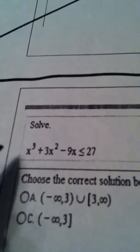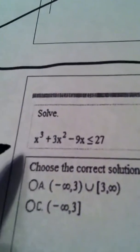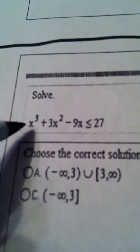Okay, ladies and gentlemen, here's what's going on. We have a cubic inequality, and it's currently written in this form: x cubed plus 3x squared minus 9x is less than or equal to 27.